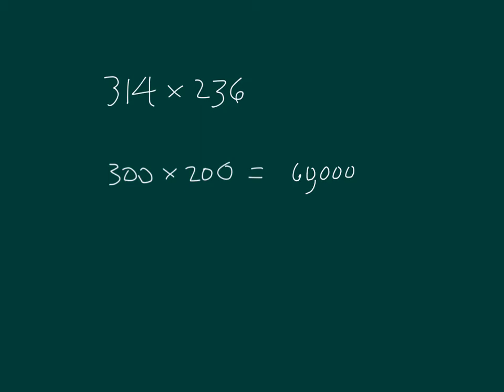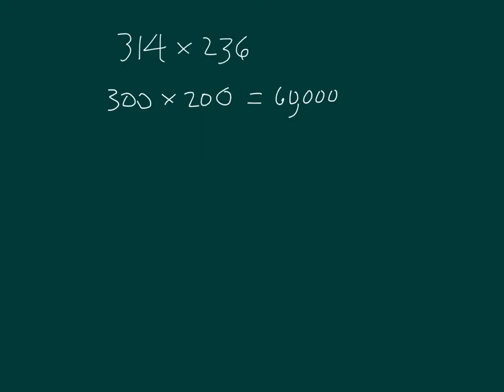Let's see what the standard algorithm shows us. I start with the 6, which is the one's place. 6 times 4 is 24. 4, regroup of 2. 6 times 1 is 6, plus 2 is 8. And 6 times 3 is 18. There's my first product.